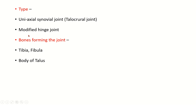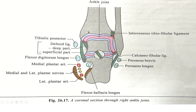It is also called the talocrural joint and is a modified hinge joint. Bones forming the joint are the tibia, fibula, and body of talus. You can see here the lower end of the tibia, the lateral malleolus of fibula, the medial malleolus of tibia, and the body of the talus. The medial malleolus is in line with the joint, whereas the epiphysis of the lower end of fibula is in line with the joint. The tip of the lateral malleolus is approximately two centimeters below the tip of the medial malleolus.